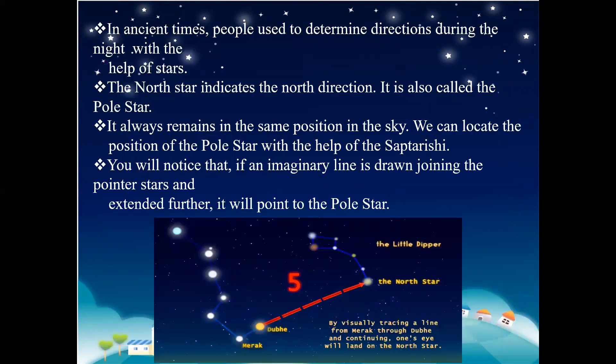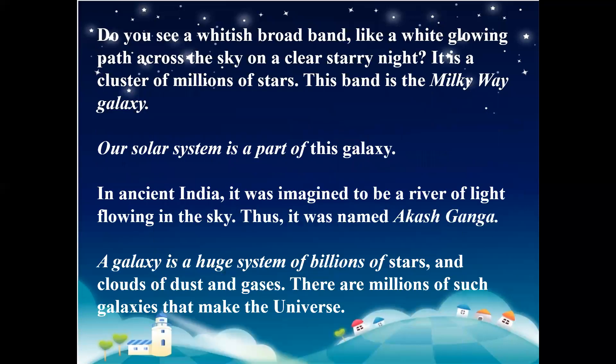In ancient times, people used to determine directions with the help of stars. The north star indicates the north direction and is also known as the pole star. It always remains in the same position in the night sky, and we can easily locate it with the help of Sapta Rishi. If an imaginary line is drawn joining the pointer stars and extended further, it will point to the pole star. On a clear starry night, you may see a whitish band like a glowing path across the sky — that is a cluster of millions of stars and this band is the Milky Way galaxy. Our solar system is a part of this galaxy.